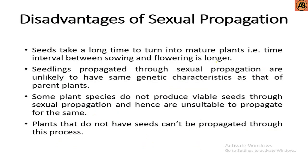Now the disadvantages of sexual propagation: seeds take a long time to turn into mature plants, and the time interval between sowing and flowering is longer. Seedlings propagated through sexual propagation are unlikely to have the same genetic characteristics as the parent plants. Some plant species do not produce viable seeds through sexual propagation and are hence unsuitable. Plants that do not have seeds cannot be propagated through this process.